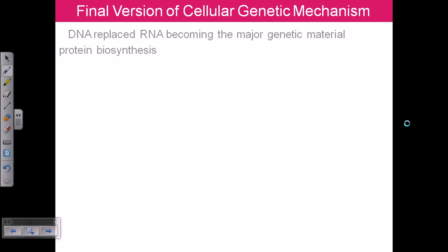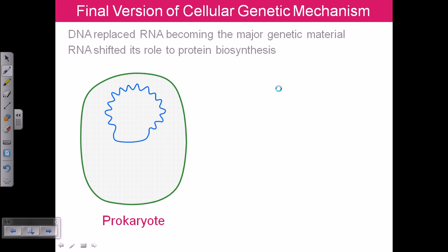Now the final version of the genetic mechanism. DNA replaced RNA becoming the major genetic material. The RNA shifted its role to protein biosynthesis. So DNA produces mRNA via transcription. Then the ribosome will sit onto these mRNAs and keep on adding these amino acid sequences via another type of RNA. It is called the tRNA.